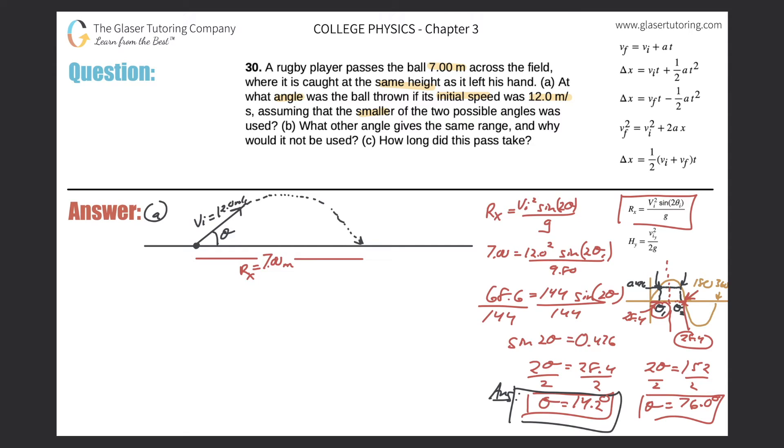The reason why it would increase the likelihood of an interception is because it would take longer. So now we can solve for how long the pass takes. For letter C, I'm going to draw a coordinate system and plot my initial velocity vector. The θ here should be 14.2 degrees, and my initial velocity was 12. I can break this up into components. I need to find the time, and the only distance I know is the range in the x direction, therefore I need to find the initial velocity in that x direction.